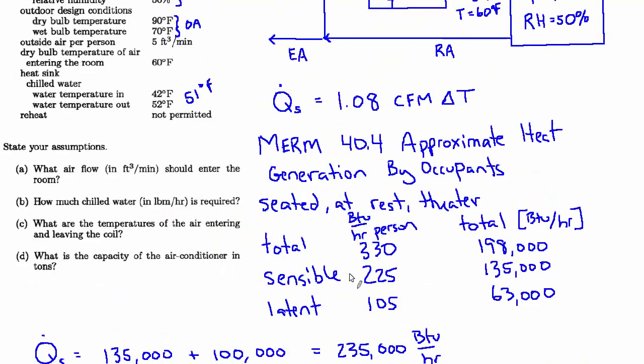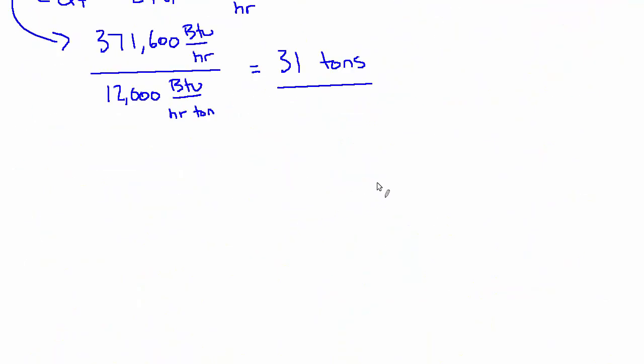The last one we want to know is how much chilled water in pounds per hour. So another rule of thumb, now for the water side, we talked about Q sensible equals 1.08 CFM delta T. That's a rule of thumb we use over and over again. Another one that's extremely common on the water side is the heat load equals 500 GPM delta T.